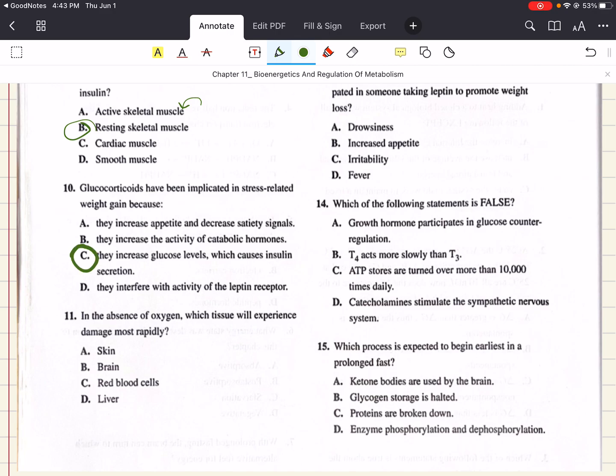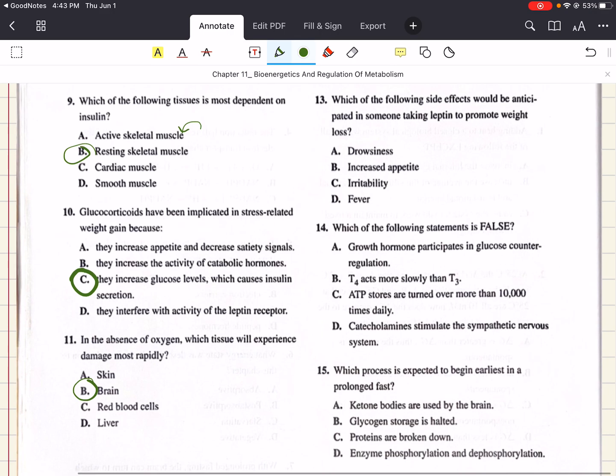11 says, in the absence of oxygen, which tissue will experience damage most rapidly? That is going to be the brain. The brain uses aerobic metabolism of glucose exclusively, and therefore it's very sensitive to oxygen levels.